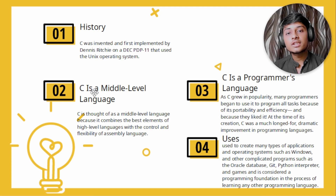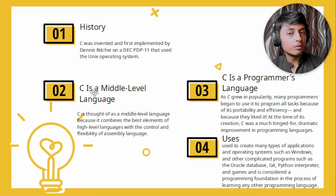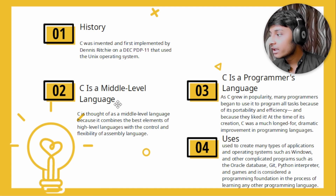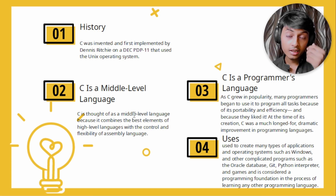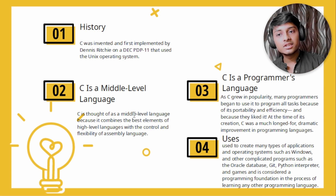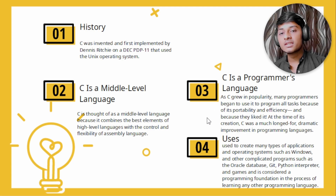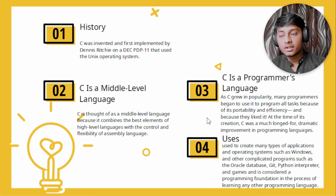Middle-level language means that it is neither a high-level language nor a low-level language. It includes features like data types similar to high-level languages, and also assembly-like low-level features. The C language is the closest to machine code among structured languages.